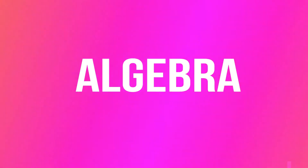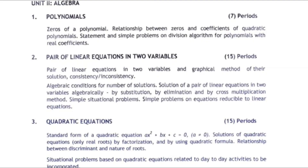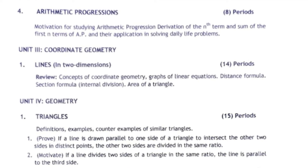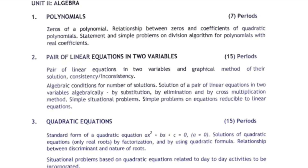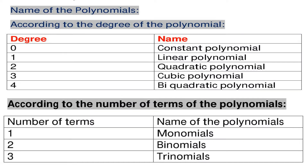In unit 2, algebra, you have to practice more as it carries the most marks. This unit has four chapters: polynomials, pair of linear equations in two variables, quadratic equations, and arithmetic progressions. In the polynomials chapter you have learnt different kinds of polynomials — monomials, binomials, trinomials — according to their number of terms, and linear (degree 1), quadratic (degree 2), and cubic (degree 3) polynomials according to their degree.